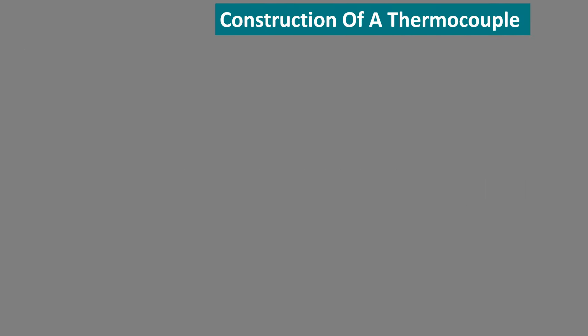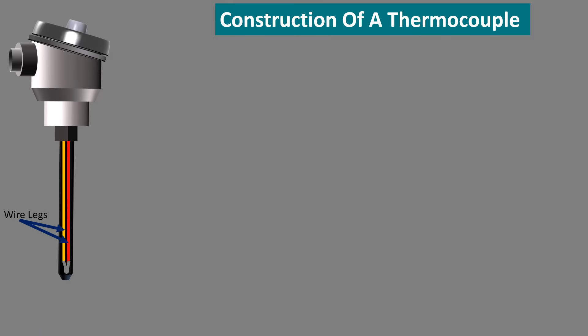Construction of a thermocouple. A thermocouple consists of two wire legs made from different metals. The wire legs are welded together at one end creating a junction. The end of the junction is classified into three types: ungrounded, grounded, and exposed junction.